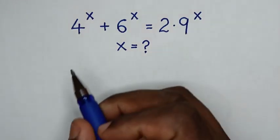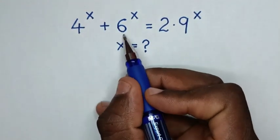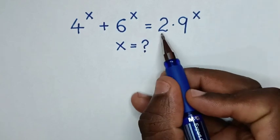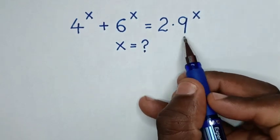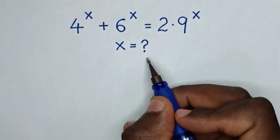Hello! Out of 4 power x plus 6 power x is equal to 2 times 9 power x — find the value of x.